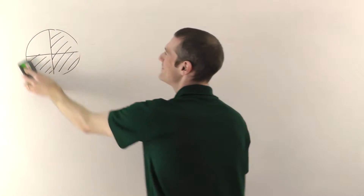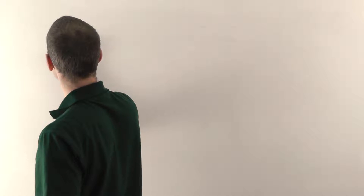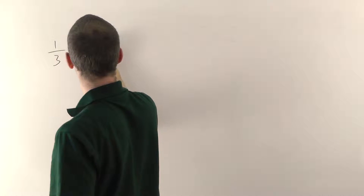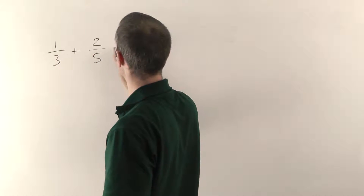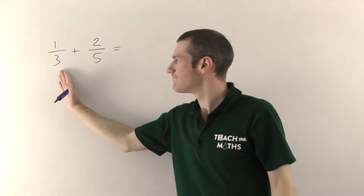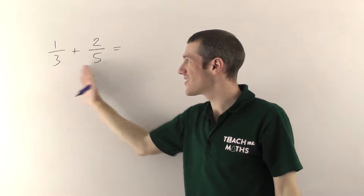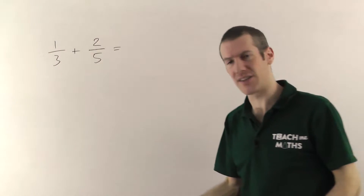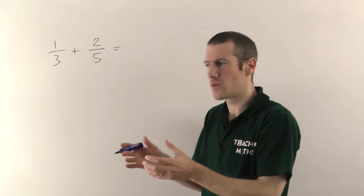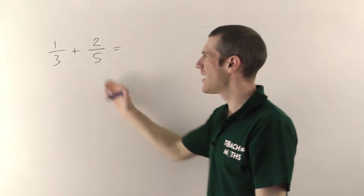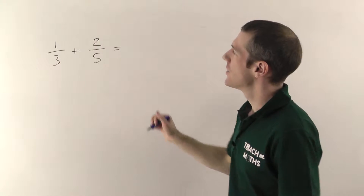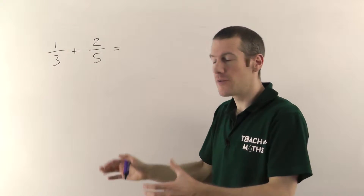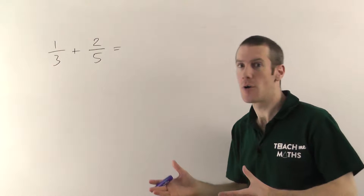Let's try a slightly harder one — I'm not going to draw a picture this time. If we have a third plus two fifths, it'd be nice if we could just change thirds into fifths. But thirds can't be rewritten as fifths. With a half and a quarter, quarters obviously go into the half — you could fit two quarters into a half. You can't fit fifths into thirds though. The number on the bottom that you want to change these into is what's called the lowest common denominator.